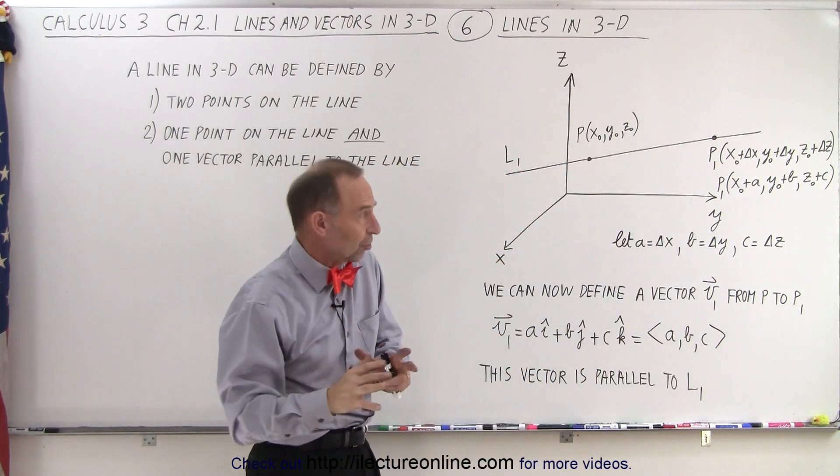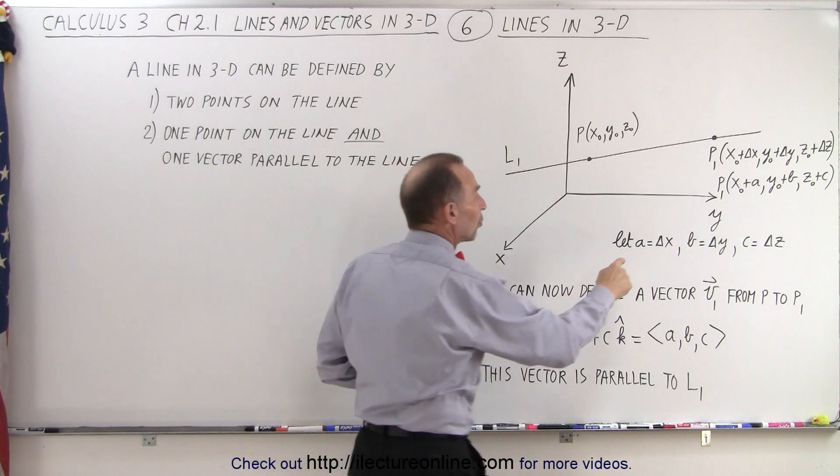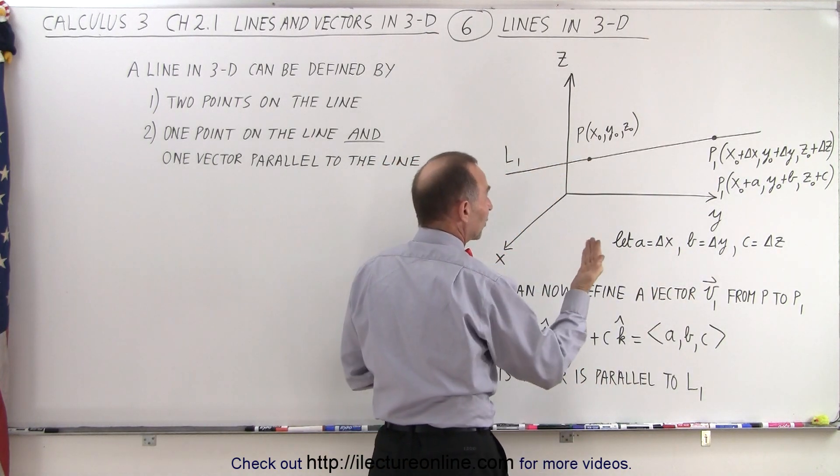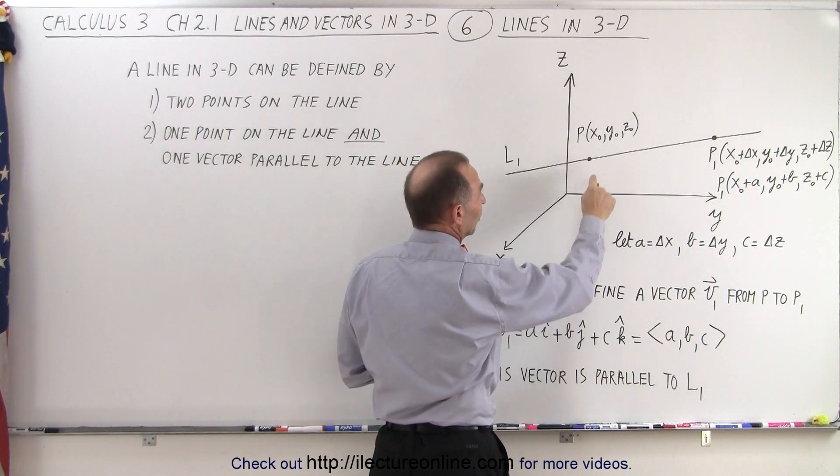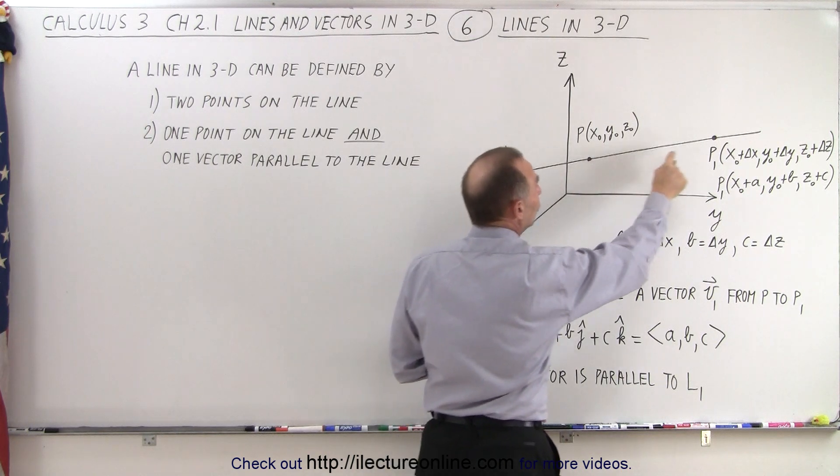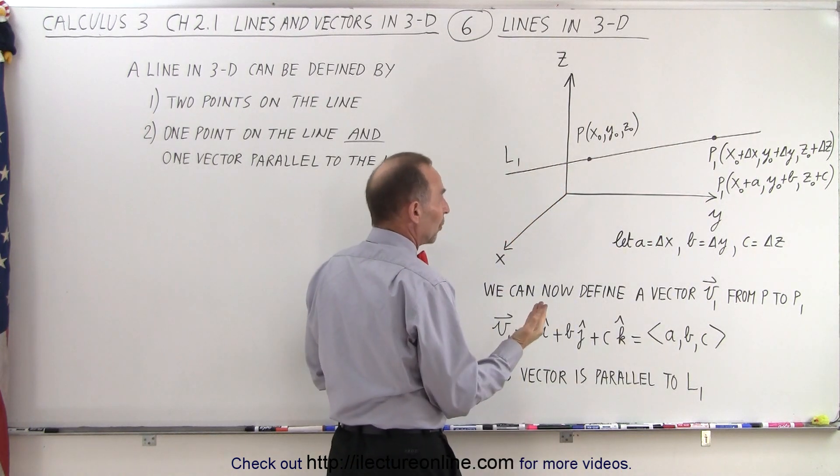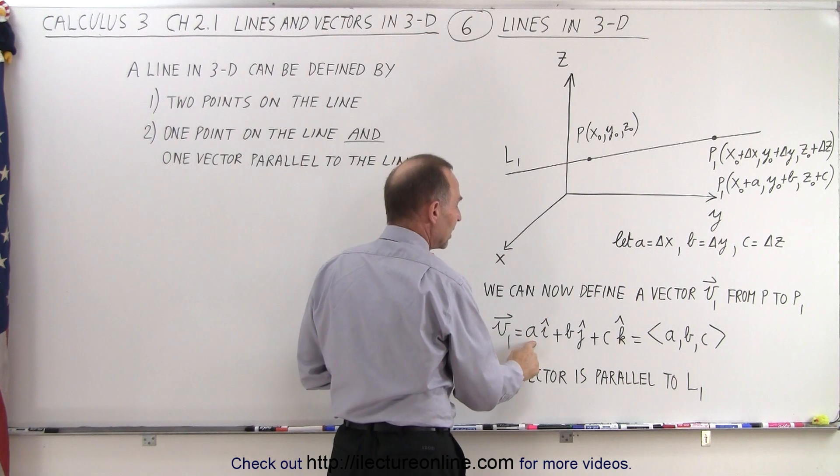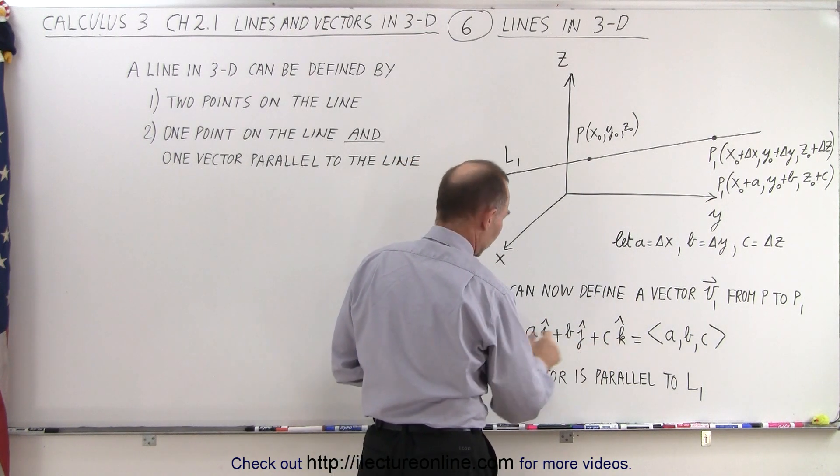So we can now define a vector with these three numbers. In other words, we can write a vector or come up with a vector that points from P to P1. And if we're going to write that, we can write it as A in the I direction plus B in the J direction plus C in the K direction.